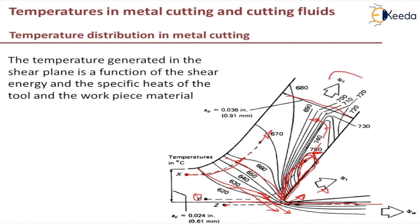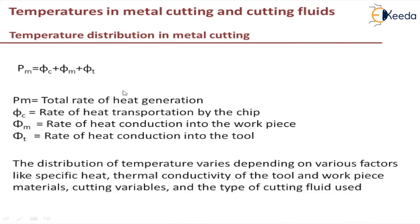If we take φc as the heat carried away by the chip, φt as the heat conducted into the cutting tool, and φw as the heat conducted into the workpiece, then for an energy balance: the input energy Pm — the motor energy we are supplying — is distributed into φc, φw, and φt. φc is the rate of heat transportation by chip, φw is the rate of heat conduction into the workpiece, and φt is the rate of heat conduction into the tool.